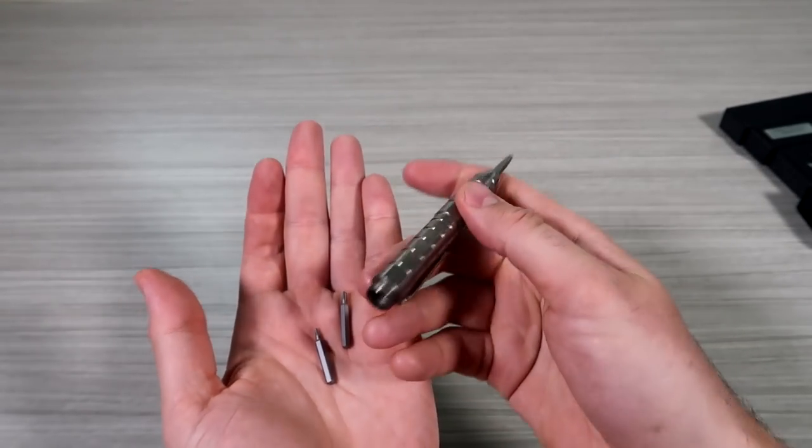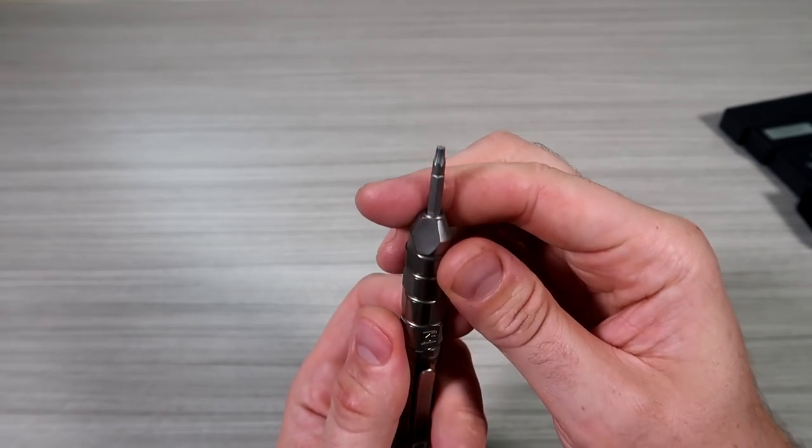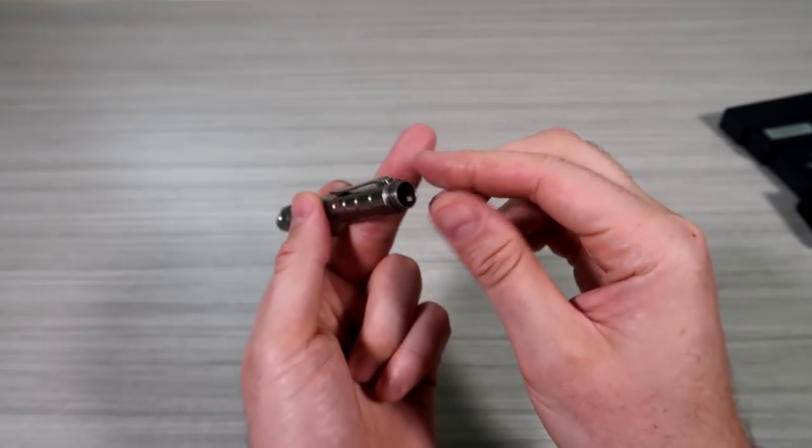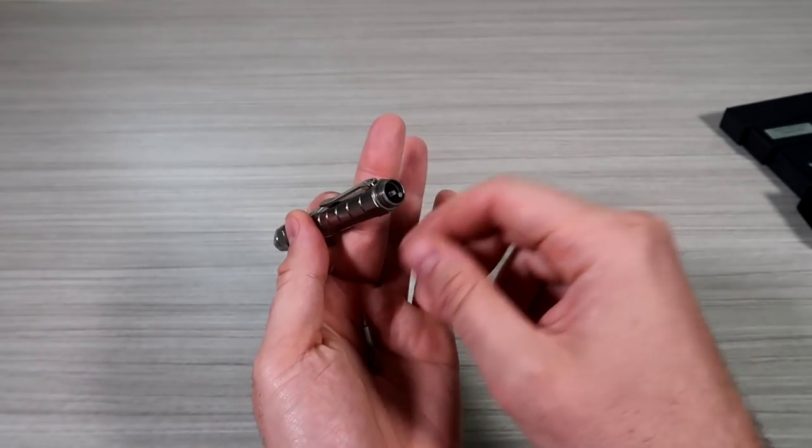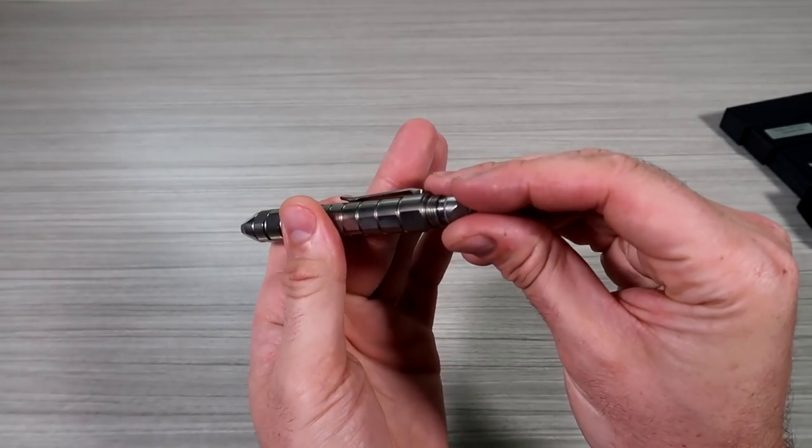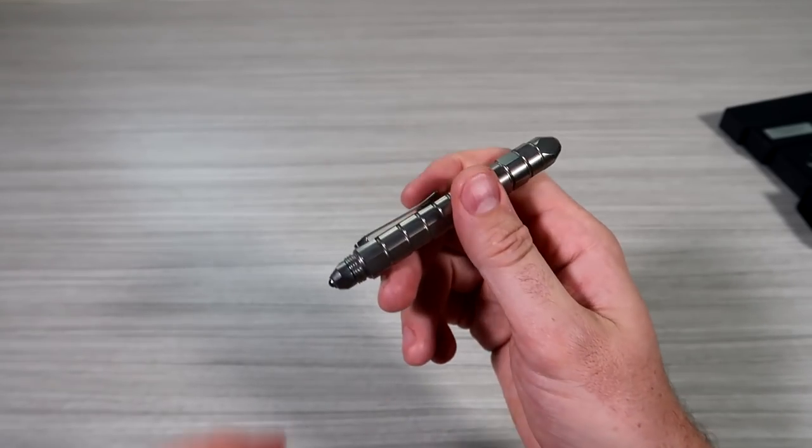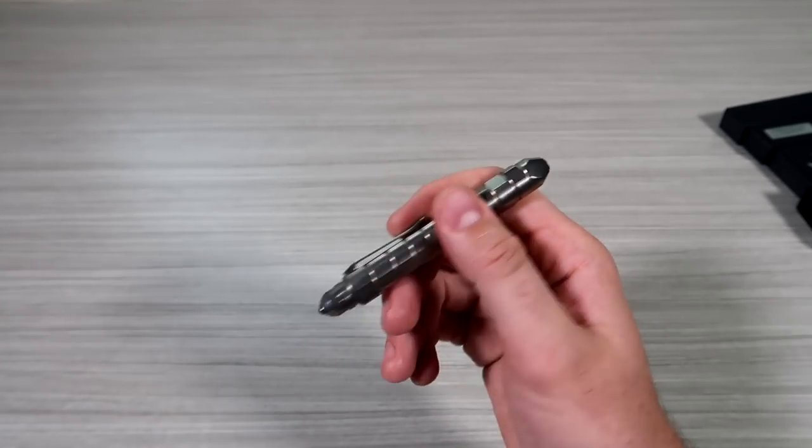You see like a star screwdriver thing. Beautiful star bits. They go, and whenever you're done with them you put them away. That is cool. Just three different sizes. And it doesn't wiggle whenever you close it all the way. Beautiful.